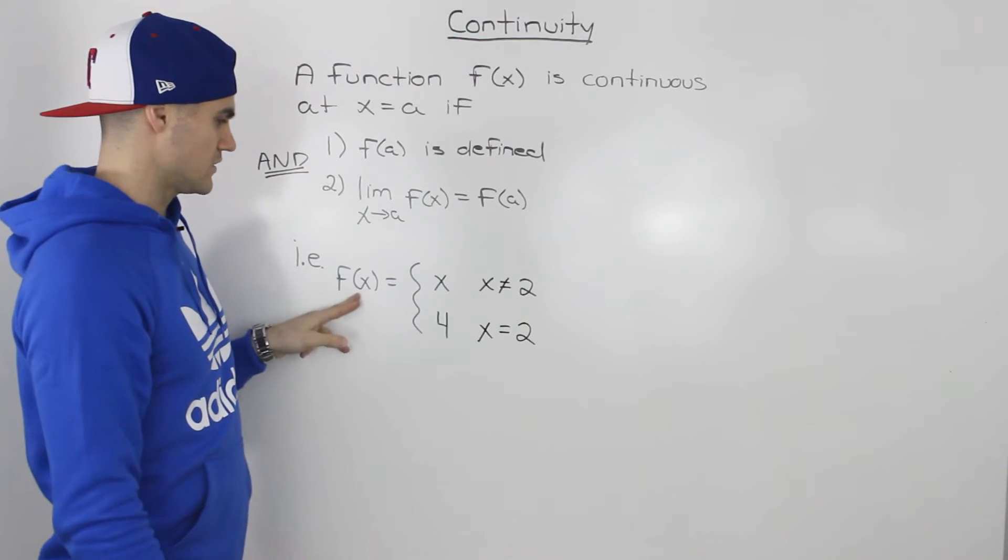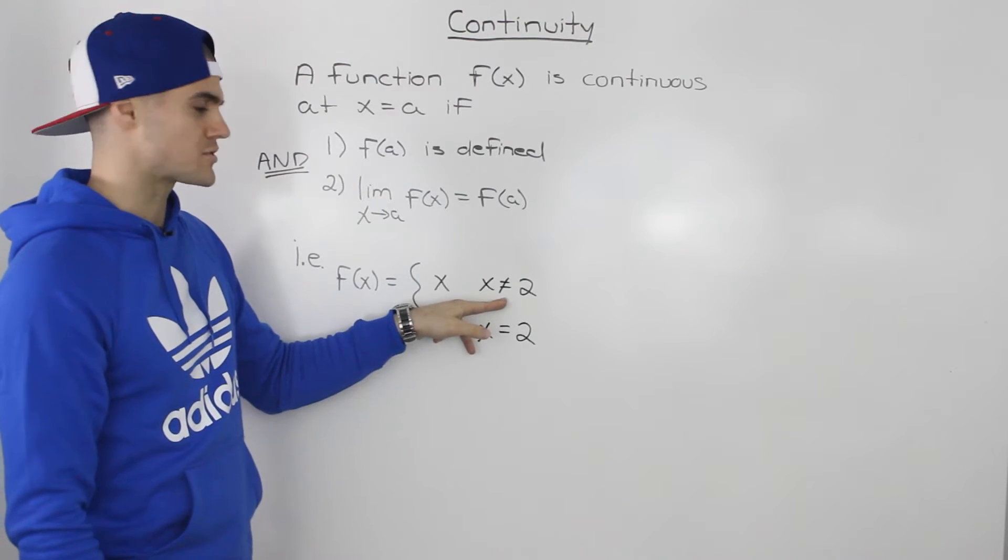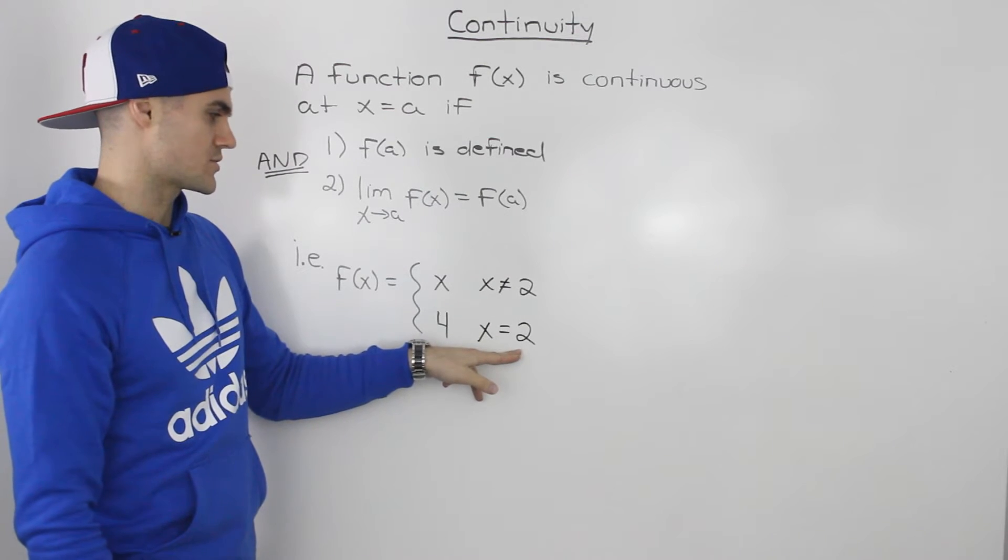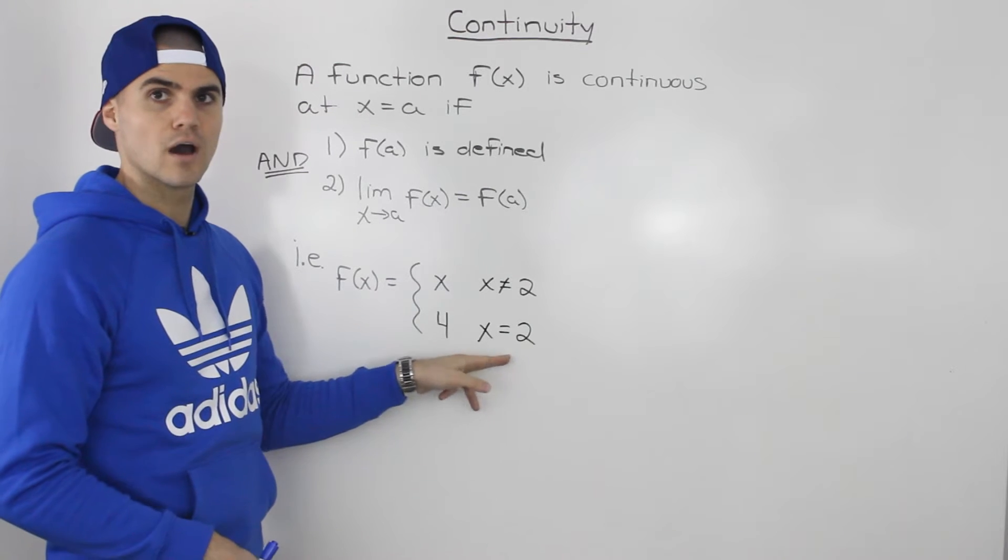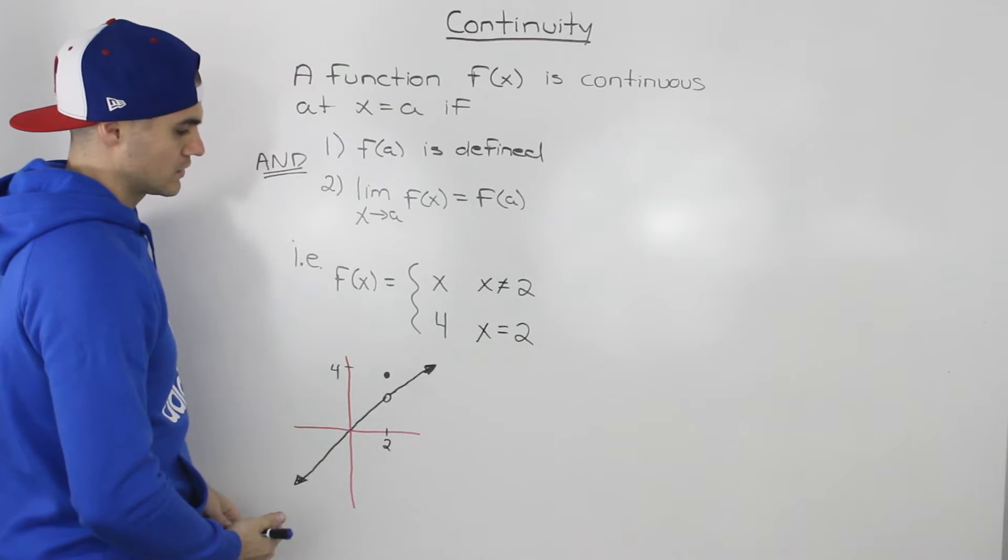So for example, let's say we're given this piecewise function f of x equals x when x is not equal to two, and it takes a value of four when x is equal to two. So let's analyze the continuity at that x value of two. So if we take that piecewise function and graph it, this is how the graph is going to look like.